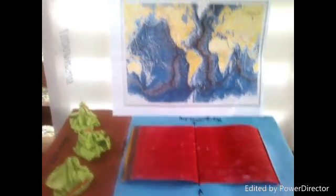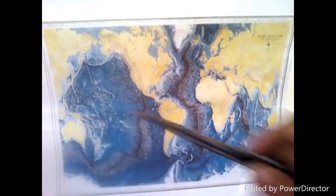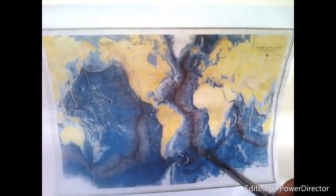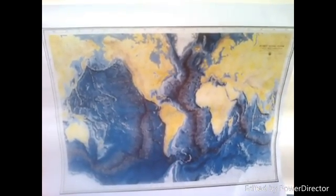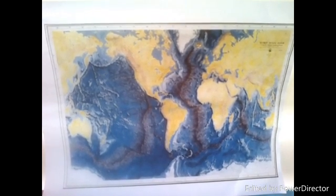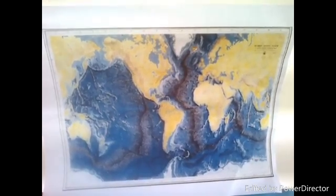This explains why the Pacific Ocean is getting smaller and why the Atlantic Ocean is getting wider. If the subduction is faster than seafloor spreading, the ocean shrinks. When the seafloor spreading is greater than the subduction, then ocean gets wider.